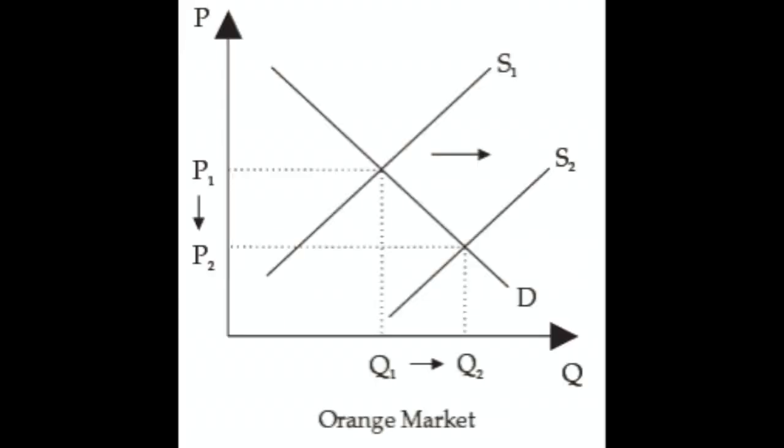Consumers are also buying more oranges, but why? It's not because of the weather directly. The reason they're buying more oranges is that the price of oranges has fallen in the new equilibrium, so they're buying more because oranges are cheaper. That's what the downward sloping demand curve shows: holding everything else equal, if oranges get cheaper, people want to buy more oranges. That's why we're moving along the demand curve.